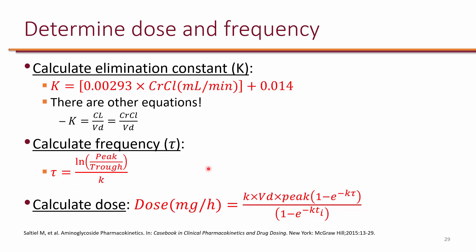Once you figure out tau and round it to something realistic, you use the dose equation. So if you found a tau of 5 and rounded it to 6, you use 6 in the equation along with the K you calculated, the target peak, the volume of distribution from previous slides, and K again. You also plug in the time of infusion. For simplicity, we infuse aminoglycosides over one hour, so you plug in 1. It is also common to use a 30-minute infusion — you would put 0.5 — but that makes calculations more difficult. It doesn't matter whether you use 30-minute or 1-hour infusion as long as you get the dose and frequency right. I recommend using a time of infusion of 1 to keep calculations simple.